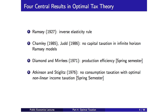The third result is due to Diamond and Mirrlees, called production efficiency — we will not cover that in this class, but it's the idea that no matter what your tax system is, you want to maintain efficient production; you want to be on the frontier of the production possibilities set. As an example, you don't want to tax intermediate inputs. They show under very general conditions that no matter what tax instruments you're using, you want to produce efficiently. Why introduce unnecessary distortions into the production process when you could just tax the final goods anyway?